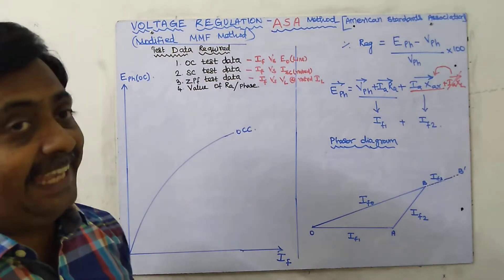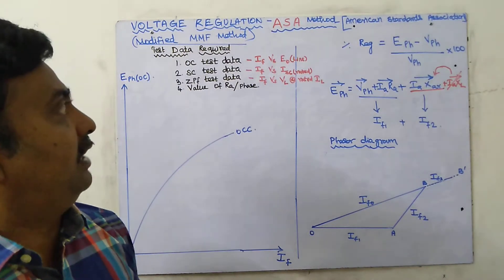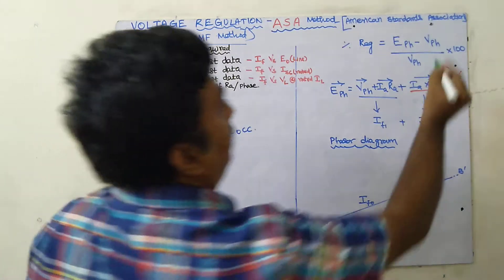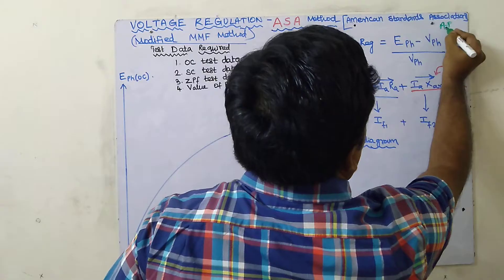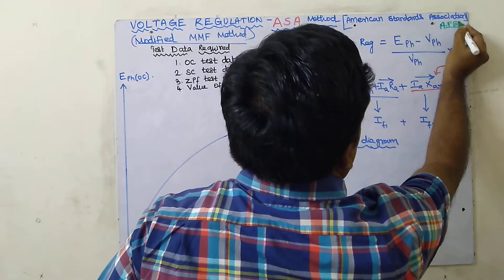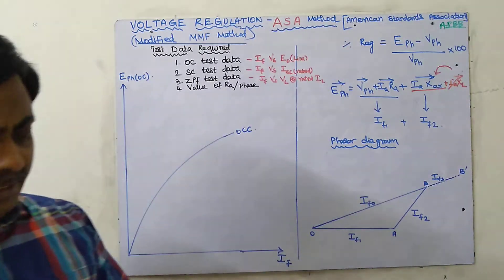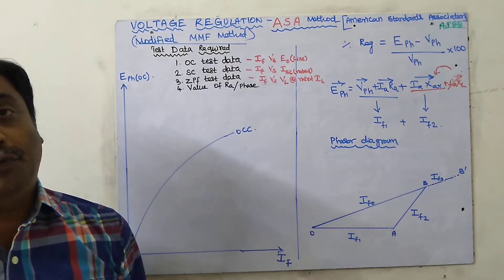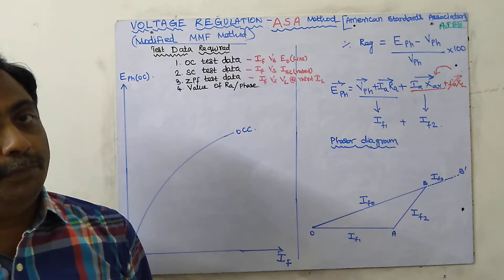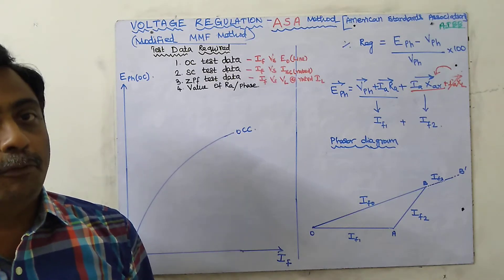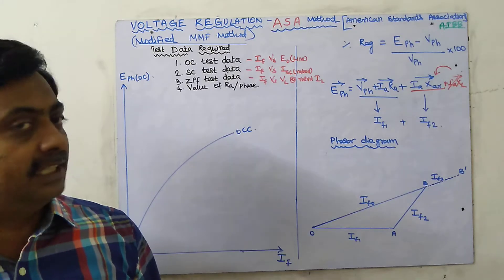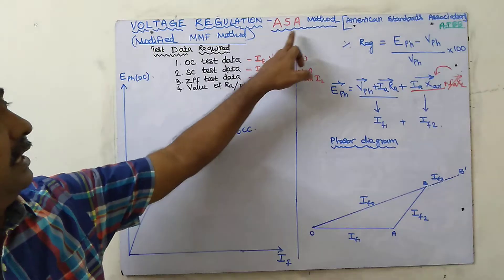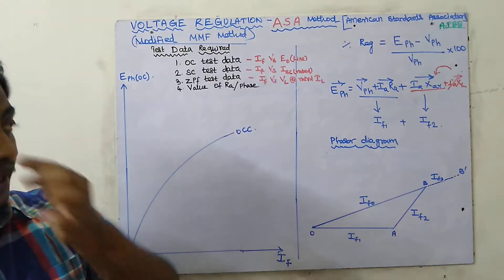Finding voltage regulation by the ASA method. What is ASA? It stands for American Standard Association, also called the AIEE method. This is the modified MMF method. Already we have seen how to find voltage regulation by the EMF method, MMF method, and ZPF method — three methods we have seen. Now we are going to discuss the ASA method, the American Standard Association method.